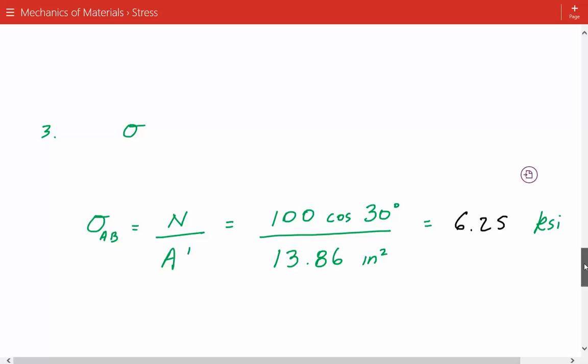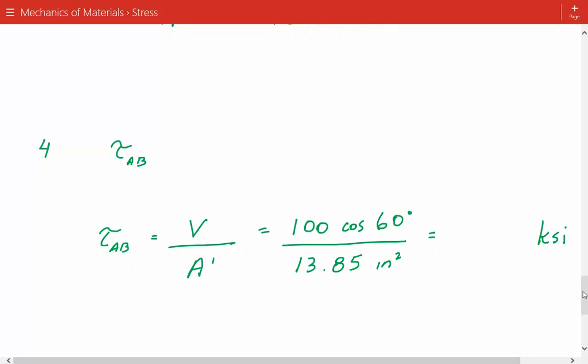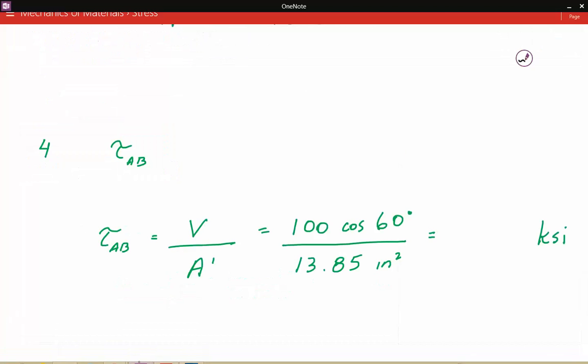And the average shear stress is equal to the shear force divided by the area. And so that's equal to 3.608 ksi.